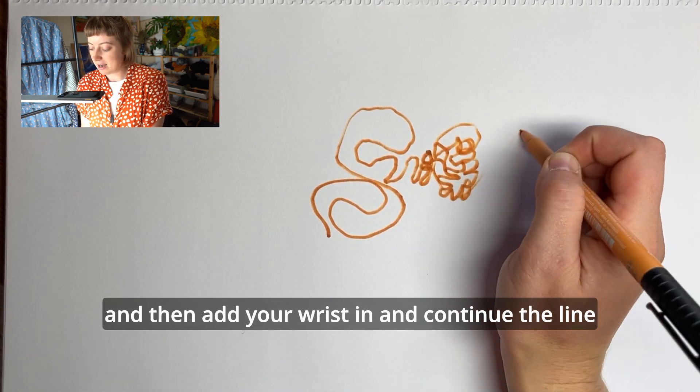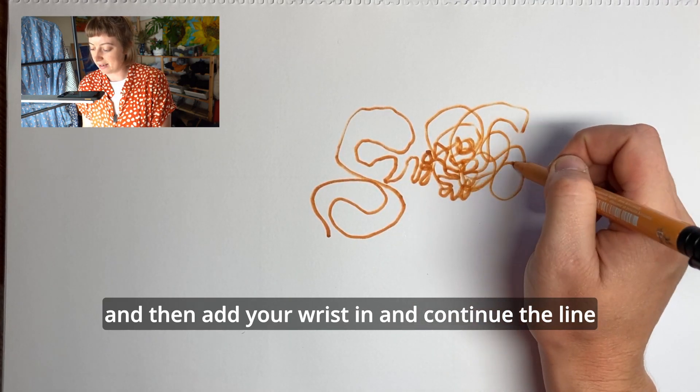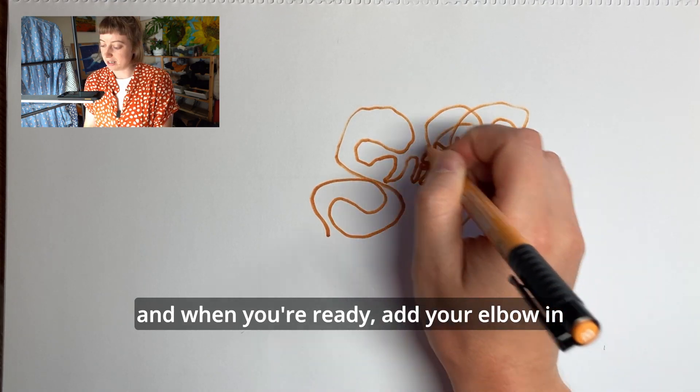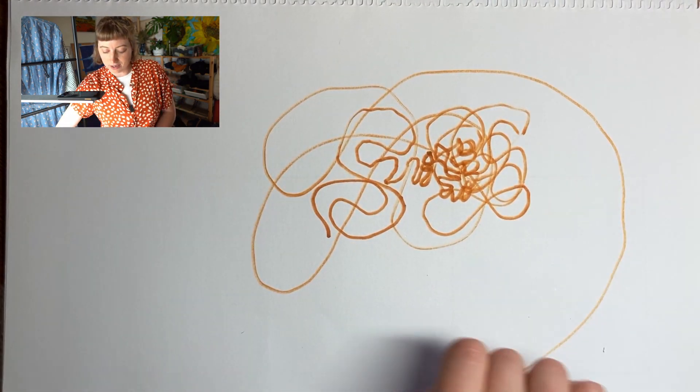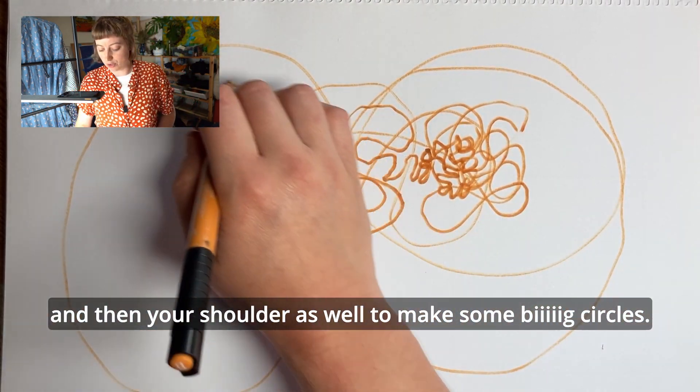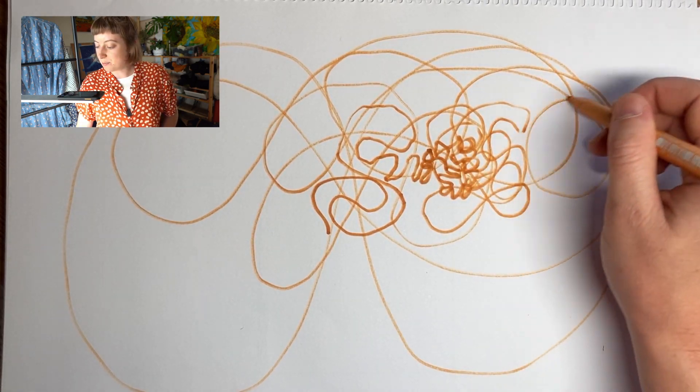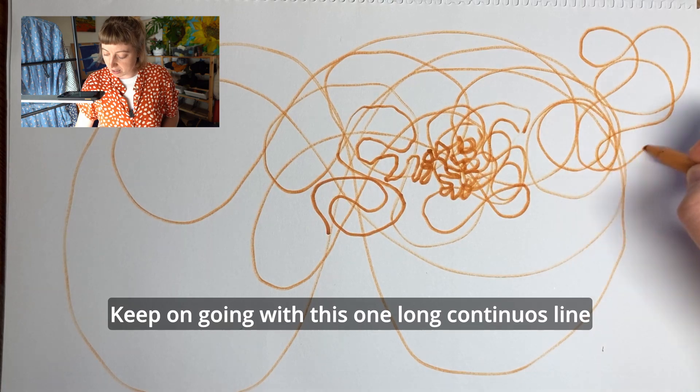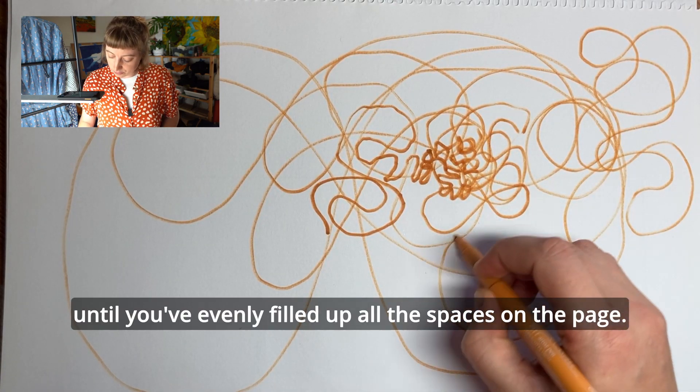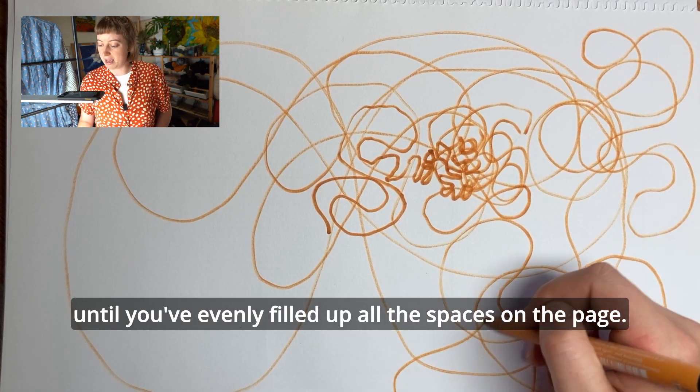And then add your wrist in and continue the line. When you're ready, add your elbow in and then your shoulder as well to make some big circles. Keep on going with this one long continuous line until you've evenly filled up all the spaces on the page.